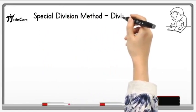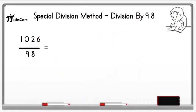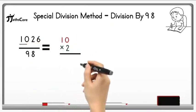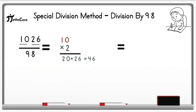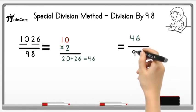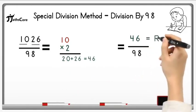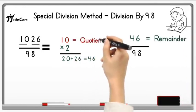Let's take one more example on this technique. Example is 1026 divided by 98. So write down this 10 here and multiply it with 2. 10 multiply by 2 is equal to 20 and add this 26 in it so 20 plus 26 is equal to 46. Now take this 46 in the next step and divide it by 98 but it is not possible because 46 is less than 98. So this 46 is a remainder and 10 is a quotient.